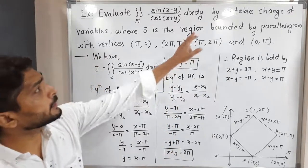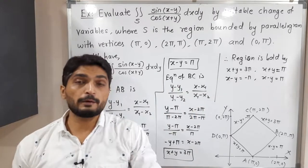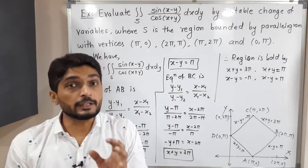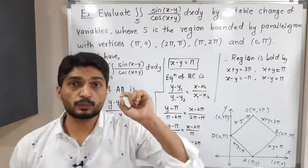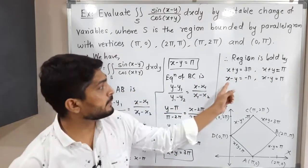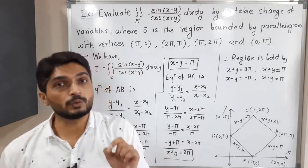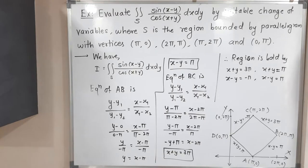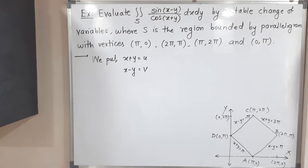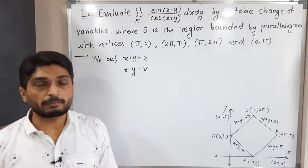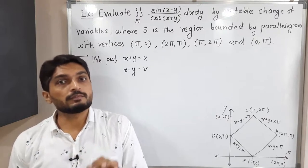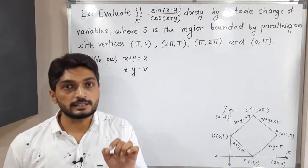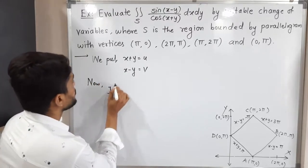The problem asks us to use a suitable change of variables. Observing the boundary equations, we see x + y and x − y appearing repeatedly, so we substitute u = x + y and v = x − y. After substitution we need to find the Jacobian. Instead of solving for x and y in terms of u and v, we will find J′ first.